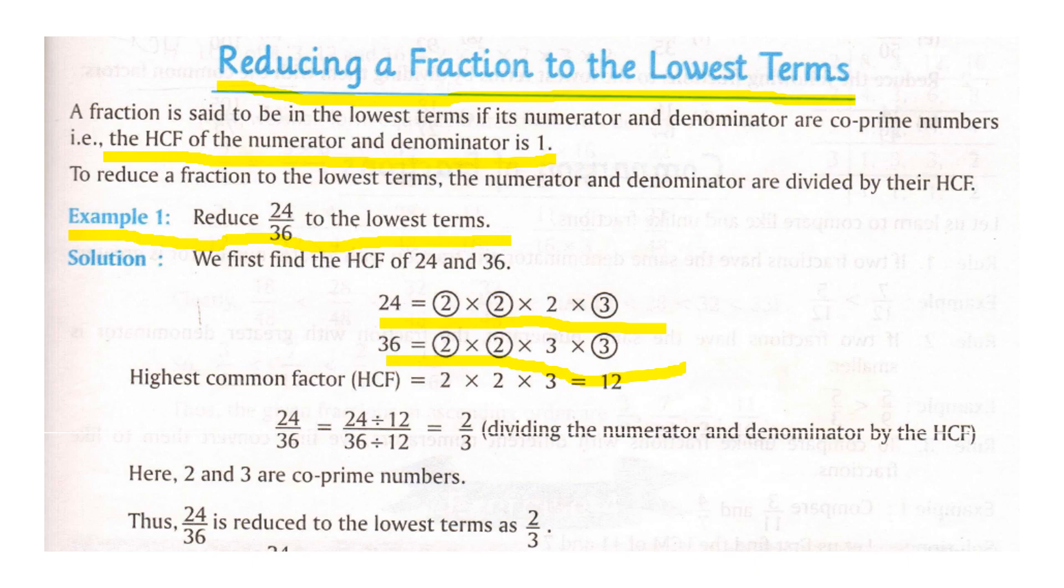You have to see which all numbers are common here. So 2 is common. So we will take all the 2's as 1, 2. One more 2 is common that will be taken as 1, 2 and 3's are common. So this 2, 3's will be taken as 1, 3. Now 2 into 2 into 3 will give you 12. So our HCF is 12.